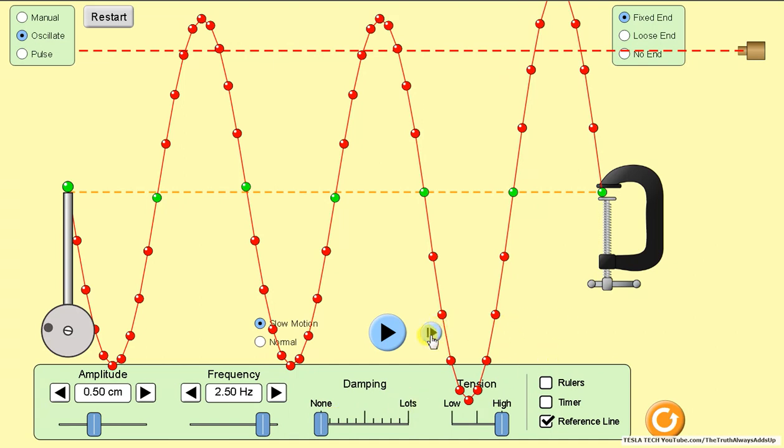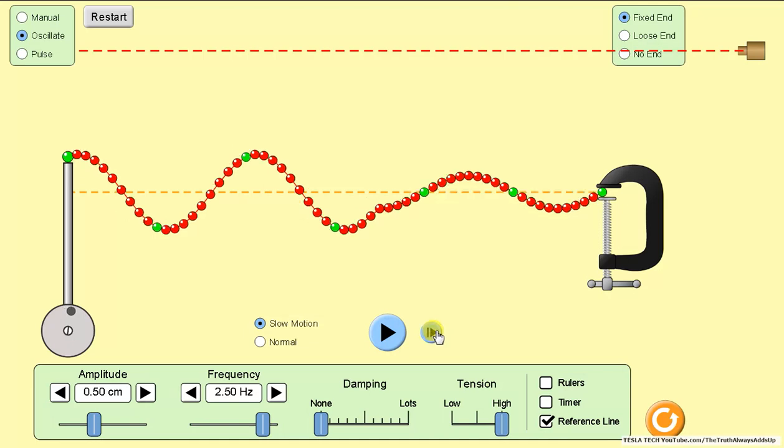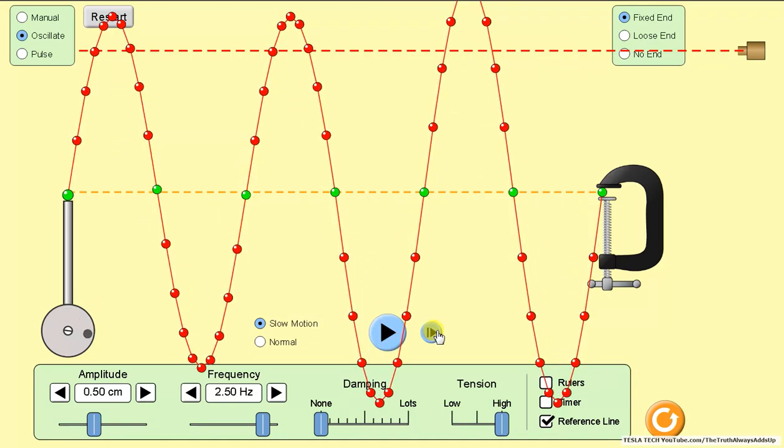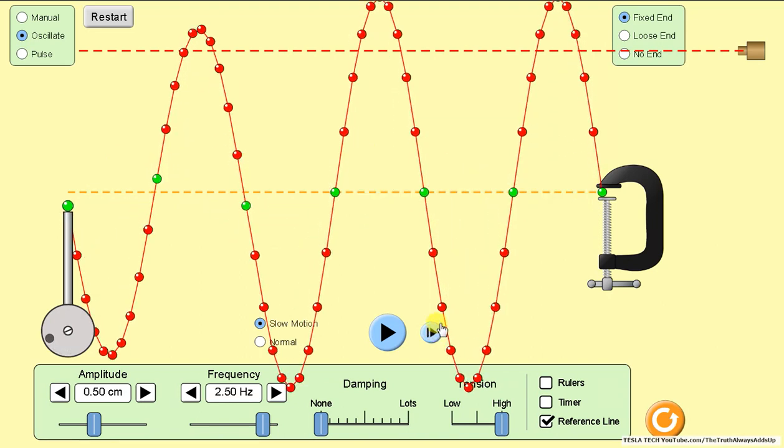Just like Don Scott shows or talks about with Birkeland currents. Yeah, these two are higher now, these two are higher and these two are lower power. But every time it goes down the C-clamp and reflects back, it's adding power to the standing wave.